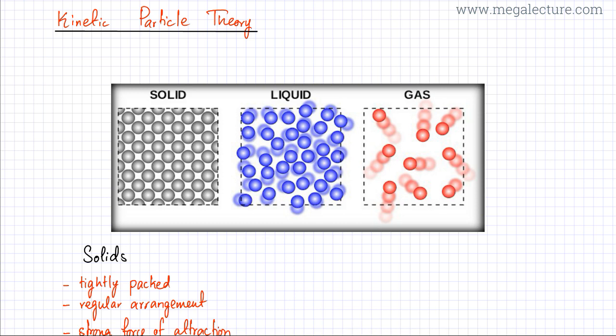Just think of matter as particles. And there are three different states in which particles could exist: one is a solid state, the other one is a liquid state, and the third is a gaseous state.